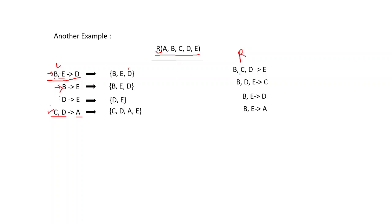Now let's check the right-hand side closures. BCD gives E, so computing the closure gives B, C, D, E, and since BE gives you A and you have both B and E, you will also get back A. Next, for BDE giving C, the closure gives B, D, E, C, and again you have B and E, so BE gives you A and you get back A as well.